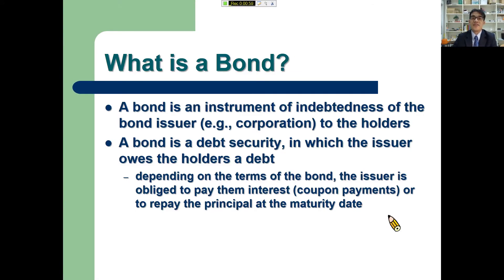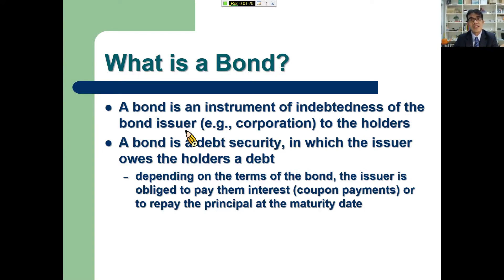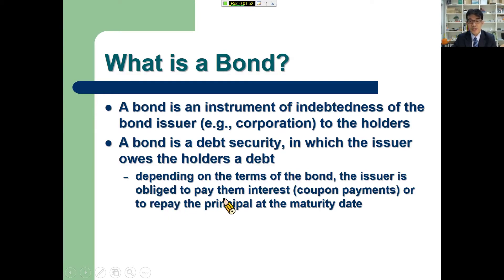First, let's define what a bond is. A bond is an instrument of indebtedness of the bond issuer. Since this is a financial management class, we will be focusing on corporations, although governments like the US or even municipalities also issue bonds to finance their projects. They issue bonds to the holders, so technically bond holders are like the lenders. A bond is a debt security in which the issuer owes the holders a debt.